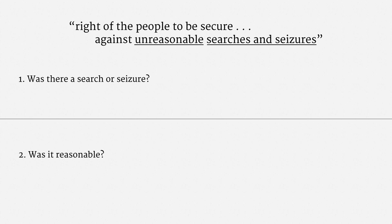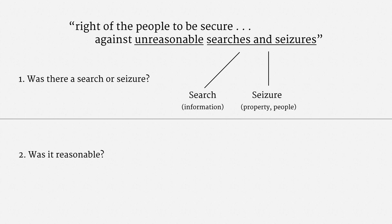With respect to whether there was a search or seizure, courts might find a search or they might find a seizure. A rough distinction between the two is that searches are about seeking information, while seizures are about substantial interference with property and people. That distinction holds up pretty well in conventional physical searches and seizures. If Peter pokes around Alice's house looking for some loot, that's a search. If Peter confiscates some of Alice's belongings or arrests Alice, then that's a seizure. In electronic searches and seizures, however, the distinction quickly gets very blurry. The rest of the course is going to focus mostly on searches, since that's how surveillance cases tend to get litigated.